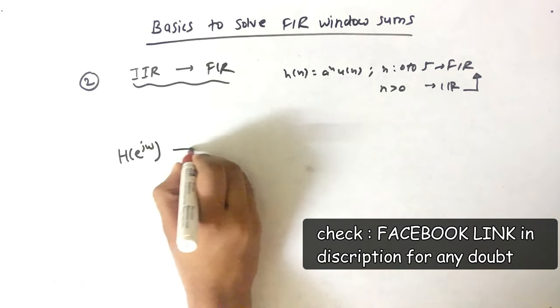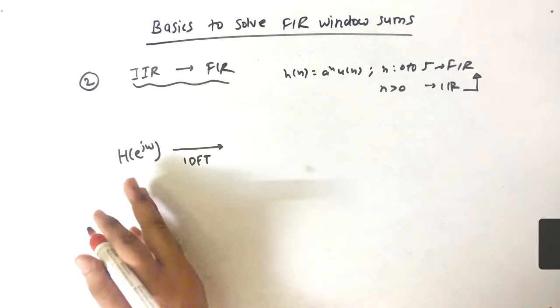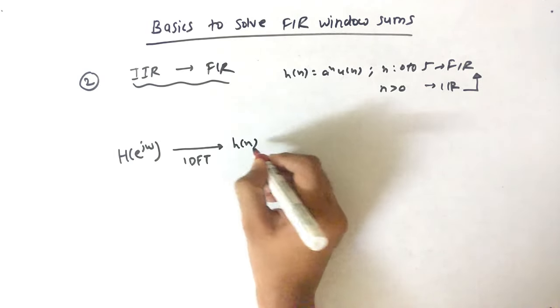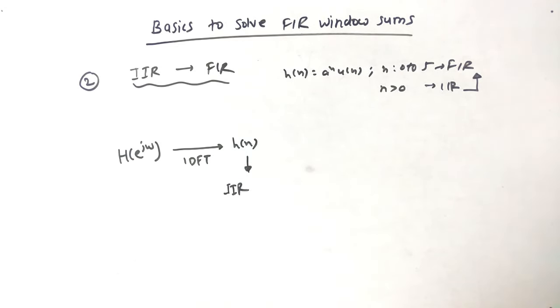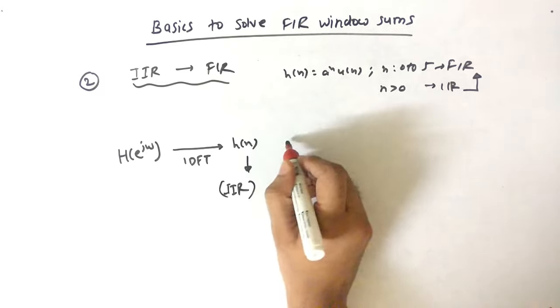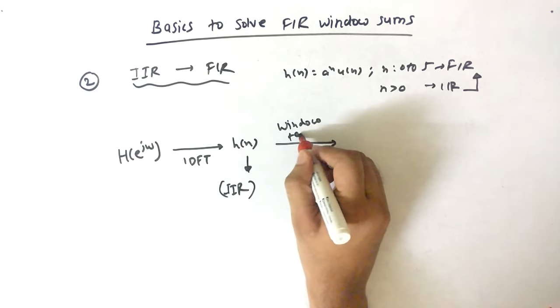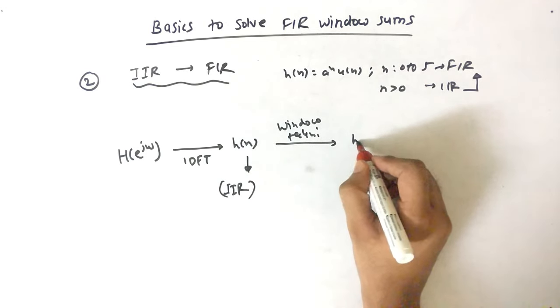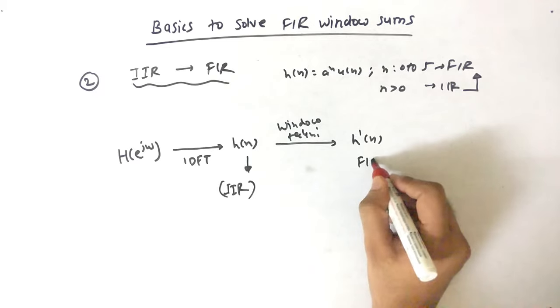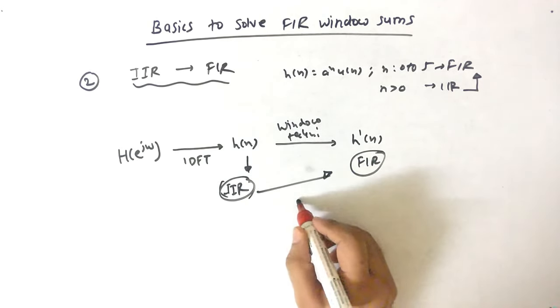After that, we apply Inverse Discrete Fourier Transform. Applying that will give us H of N. Now this H of N is Infinite Impulse Response because there is no range. Now we will use the window technique to convert this H of N into a Finite Impulse Response. From IIR we have gone to FIR by using window.